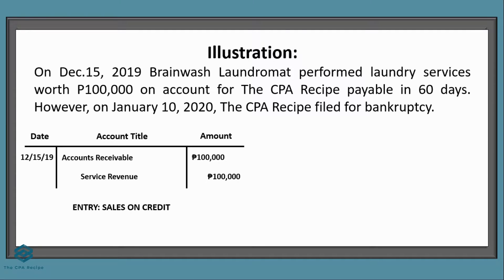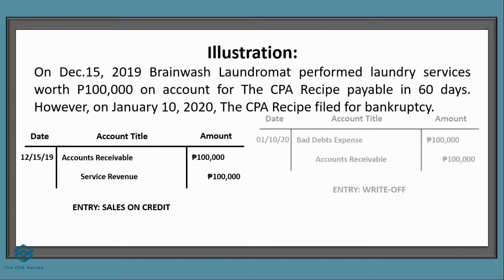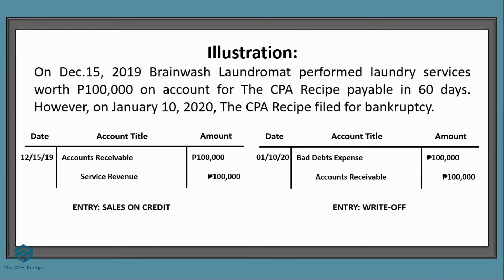The initial entry to record the sale is: on December 15, debit accounts receivable $100,000 and credit service revenue $100,000. To record the bad debt under the direct write-off method, we simply write off the accounts receivable from the CPA recipe with the following entry dated January 10, 2020: debit bad debts expense $100,000 and credit accounts receivable $100,000.